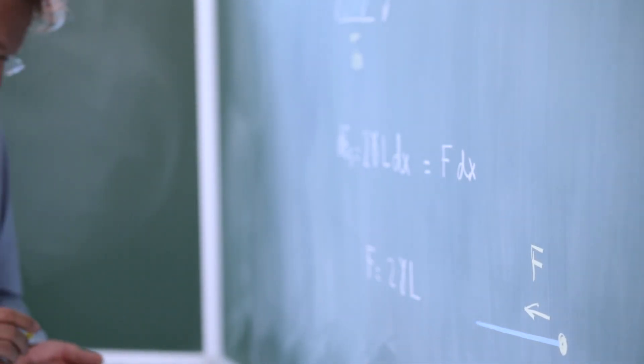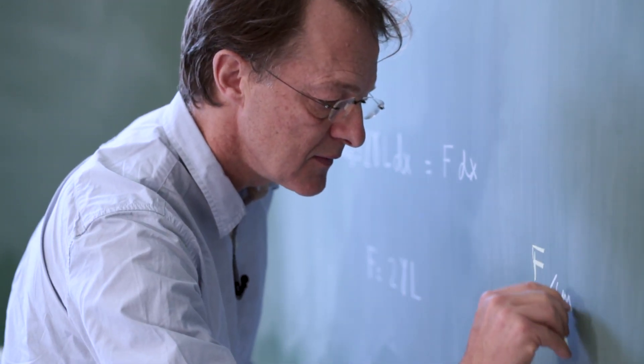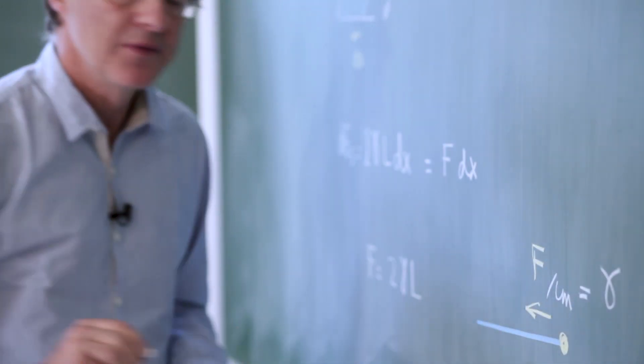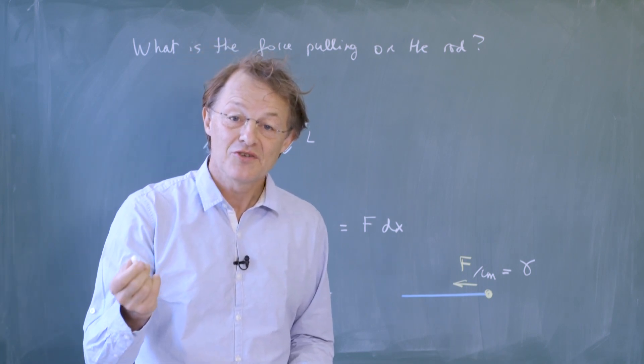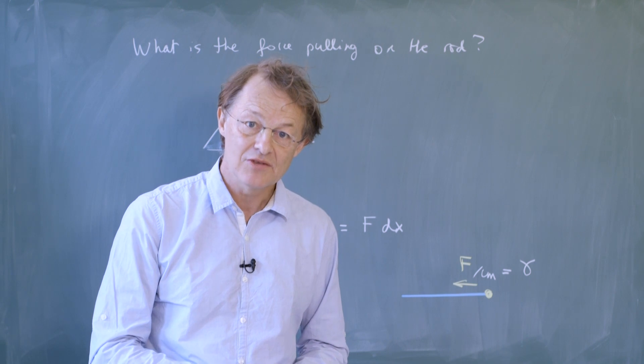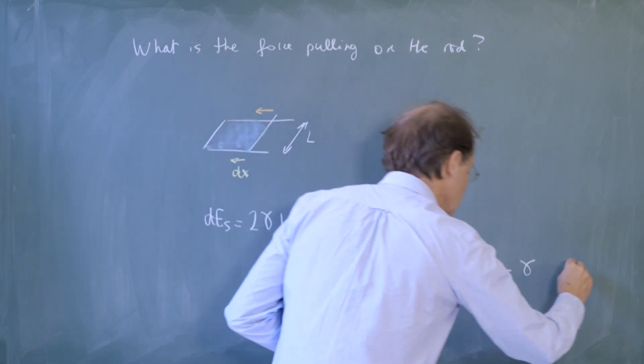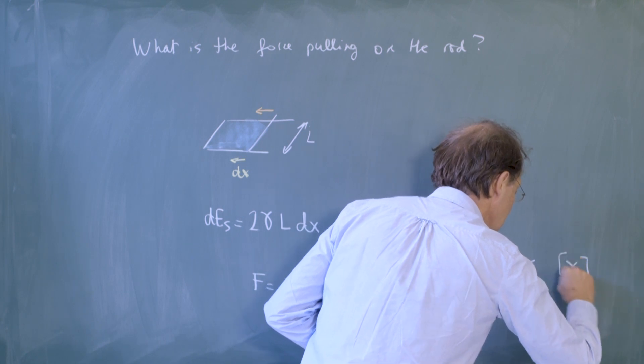This force F can be written per unit length as gamma. So the reason why surface tension is called a tension is that indeed it can be seen as a force, but from the units, it's a force per unit length.